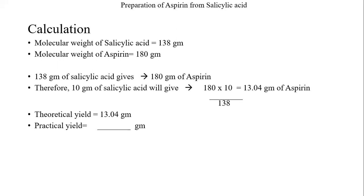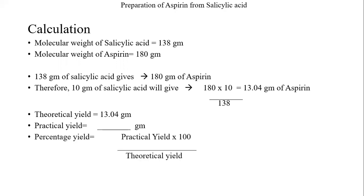The practical yield is left blank for you to fill in when you perform this experiment in the lab, and then you calculate the percentage yield. That is calculated as: practical yield divided by theoretical yield, multiplied by 100. This tells you how much aspirin you synthesized and how much loss occurred. I think it is now clear how the preparation of aspirin from salicylic acid is done. Thank you.